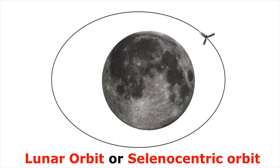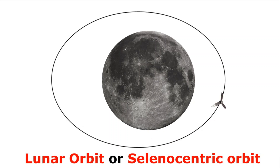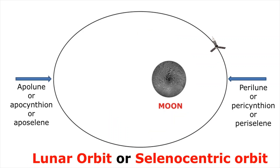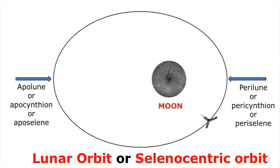A lunar orbit, otherwise called a selenocentric orbit, is the orbit of an object around the moon. In a lunar orbit, the point farthest from the moon's center of attraction is known as apollyon, aposentheon, or aposeline.